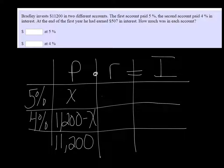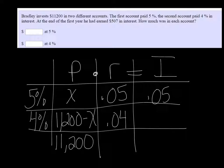So the rate, we want to convert to a decimal, so that would be .05 and .04. And then interest, I just multiply those two. Multiply those two columns together.